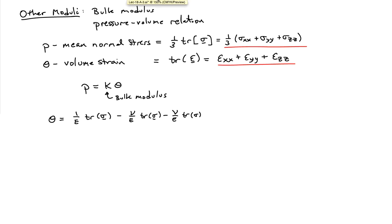So if I go ahead and do that, I'll find that I have E divided into the trace of sigma. And then I'll pick up two nu terms: minus nu over E times trace sigma, minus nu over E times trace sigma. So trace sigma is just the shorthand for the sum of sigma xx plus sigma yy plus sigma zz.